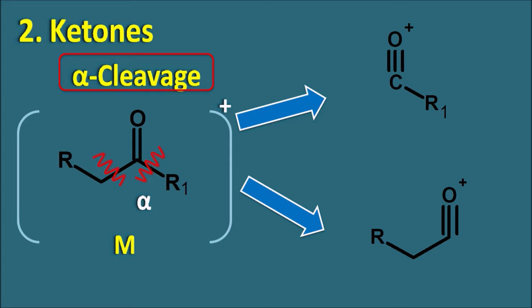If the R1 group is a simple methyl group (CH3), it has a mass of 15. When the R1 methyl group is removed as a neutral fragment, it gives a fragment ion with m/z equal to M minus 15, because 15 indicates loss of the methyl group. Ketones mainly show alpha cleavage and based on the alkyl group we can determine the m/z value. They also give McLafferty rearrangement; for a methyl ketone, the McLafferty peak is observed at m/z 58.